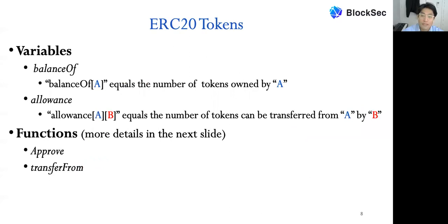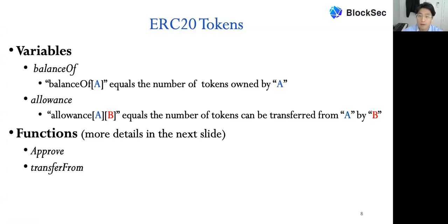Before getting into the approval process, a few important variables and functions are built into the ERC-20 token standard. 'balanceOf' is a mapping variable to record the number of tokens owned by users — for example, balanceOf(A) equals the number of tokens owned by A. 'allowance' is a nested mapping variable — for example, allowance(A, B) equals the number of tokens that can be transferred from A by B. The functions 'approve' and 'transferFrom' will be shown in more detail on the next slide.